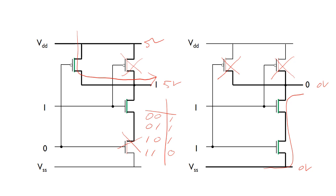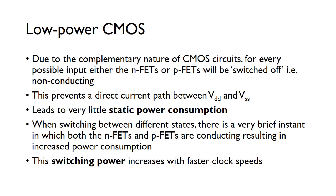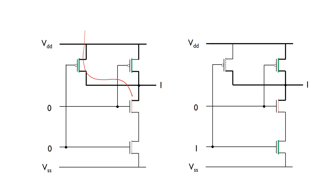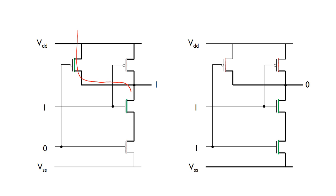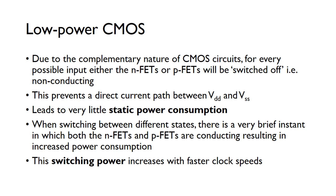Because of the complementary nature of CMOS circuits, for every possible input, either one or more of the N-FETs or P-types will be switched off — meaning they're not conducting. There's never a direct current path between the power supply rails; there's no short circuit between VDD and VSS. This means there's very little static power consumption.